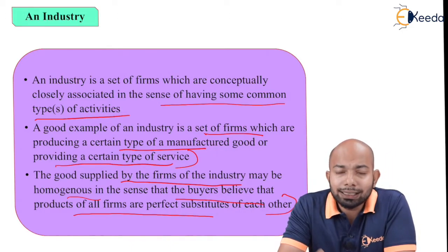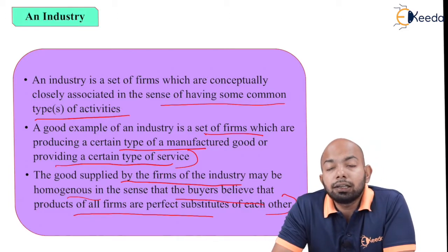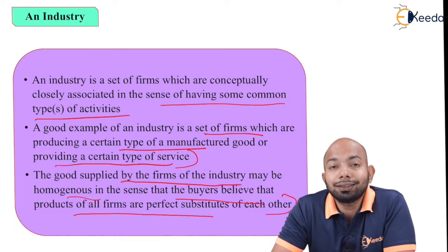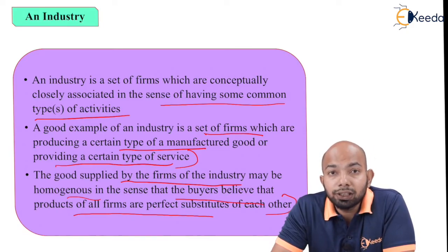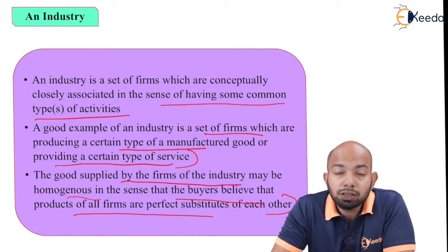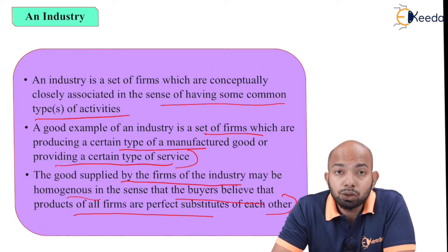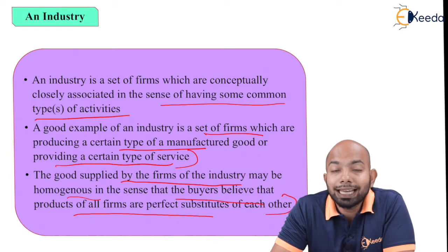Buyers believe the products are substitutes of each other. For example, there are different tire companies — TVS, MRF, CEAT — and the product is very common; it is just that different substitutes are available. You understand that one tire may be better than another, and according to your choices and budget you select the specific company and purchase. A compilation of all these firms selling homogeneous products can be called an industry.